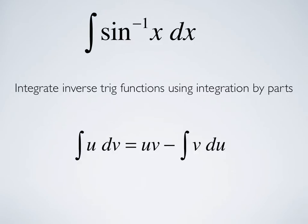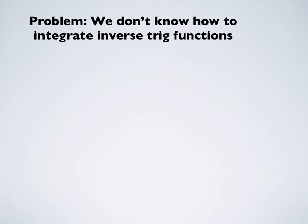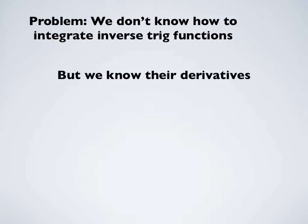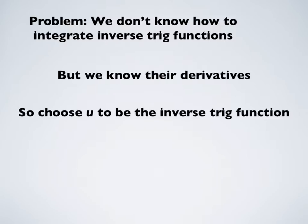Just to quickly review, the integral of u dv is uv minus the integral of v du. The problem is we don't know how to integrate inverse trig functions, but we do know their derivatives. So we can use integration by parts and we take u to be the inverse trig function, because in integration by parts we take the derivative of u.